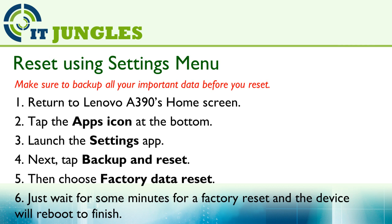Now you can reset using the settings menu. First, return to the Lenovo A390 home screen. Then tap on the apps icon at the bottom. Next, launch the settings app. And then tap on backup and reset. Then choose factory data reset. And then finally just wait for some minutes for the factory reset and the device will reboot to finish.